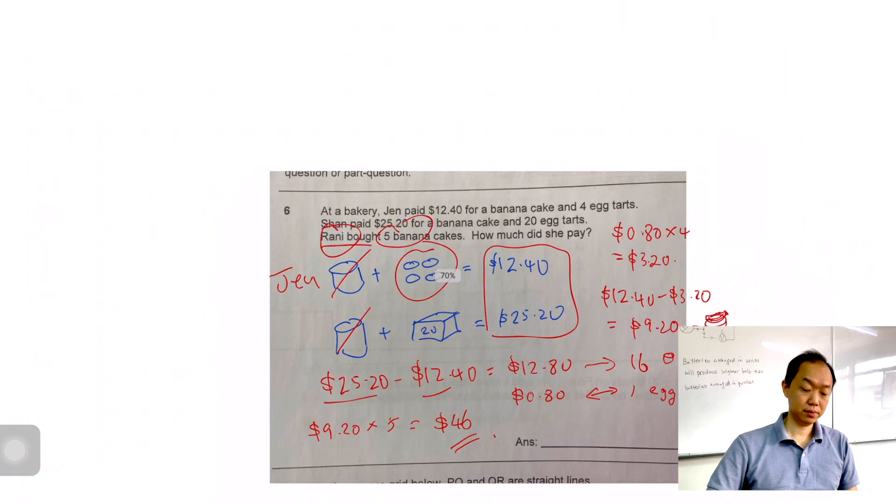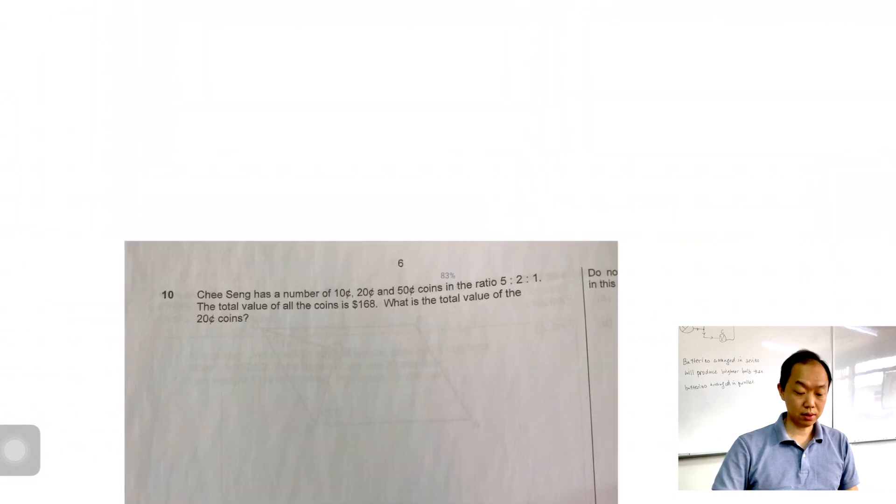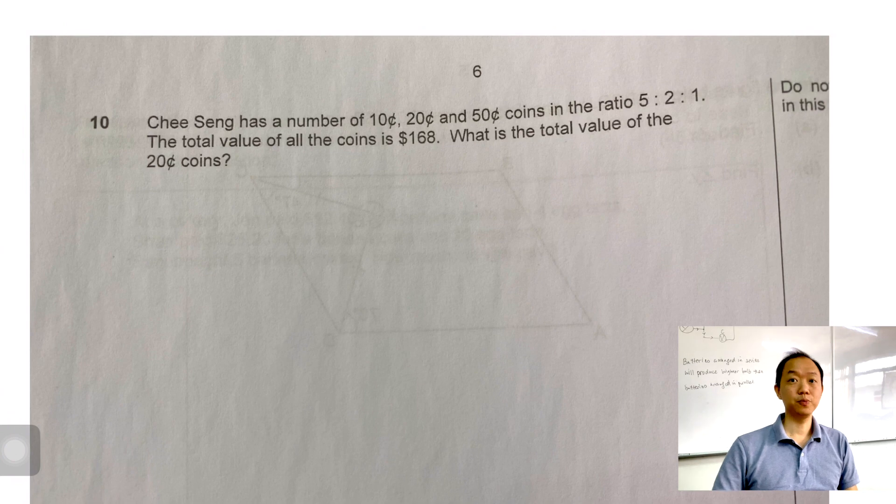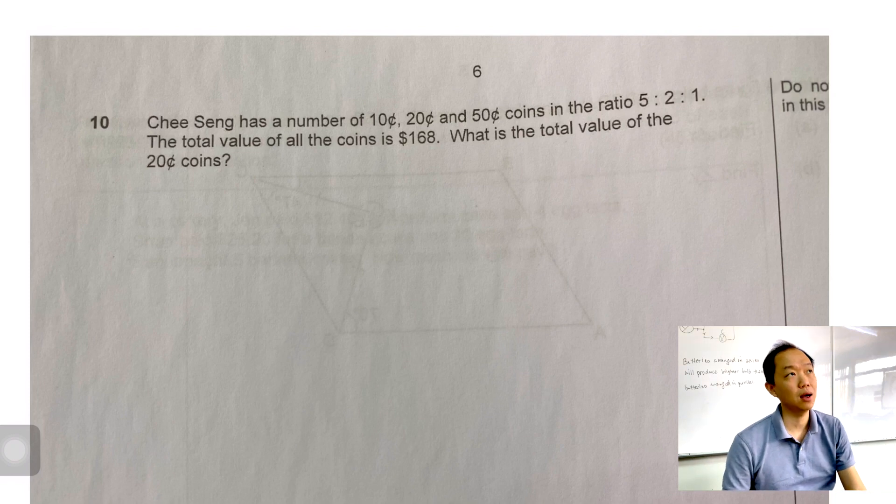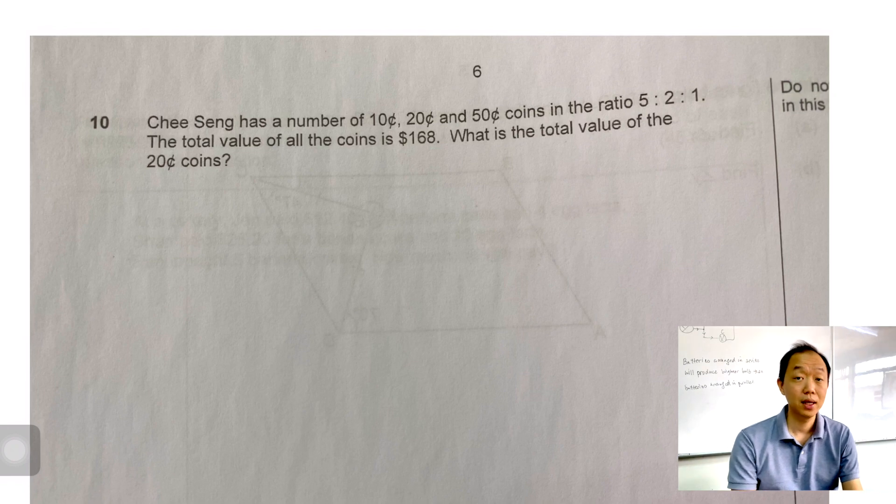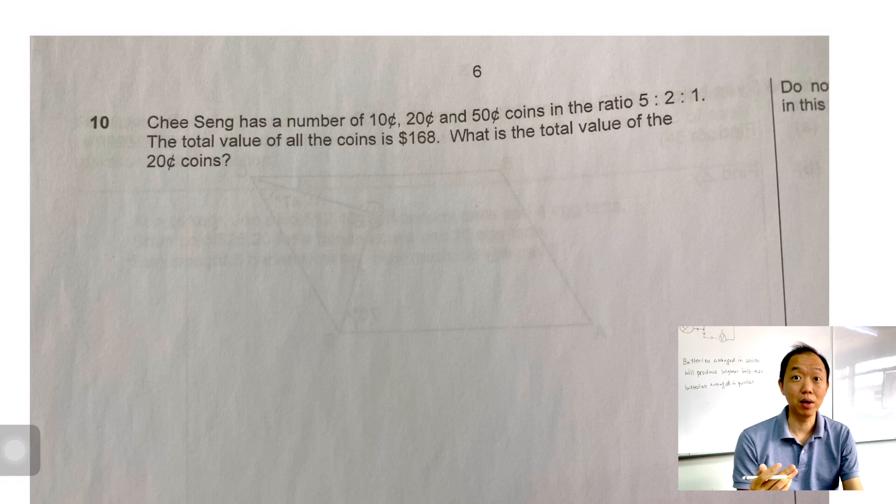The last question is question number 10. Here we go. This is a value and units question. So value and units questions, we like to use VU. We got to use VU to try and solve this. So Chi Seng has a number of $0.10, $0.20 and $0.30. The ratio 5 to 1. Now if you have watched our videos last year, I talk a lot about VU because it seems like almost every year there's VU questions.